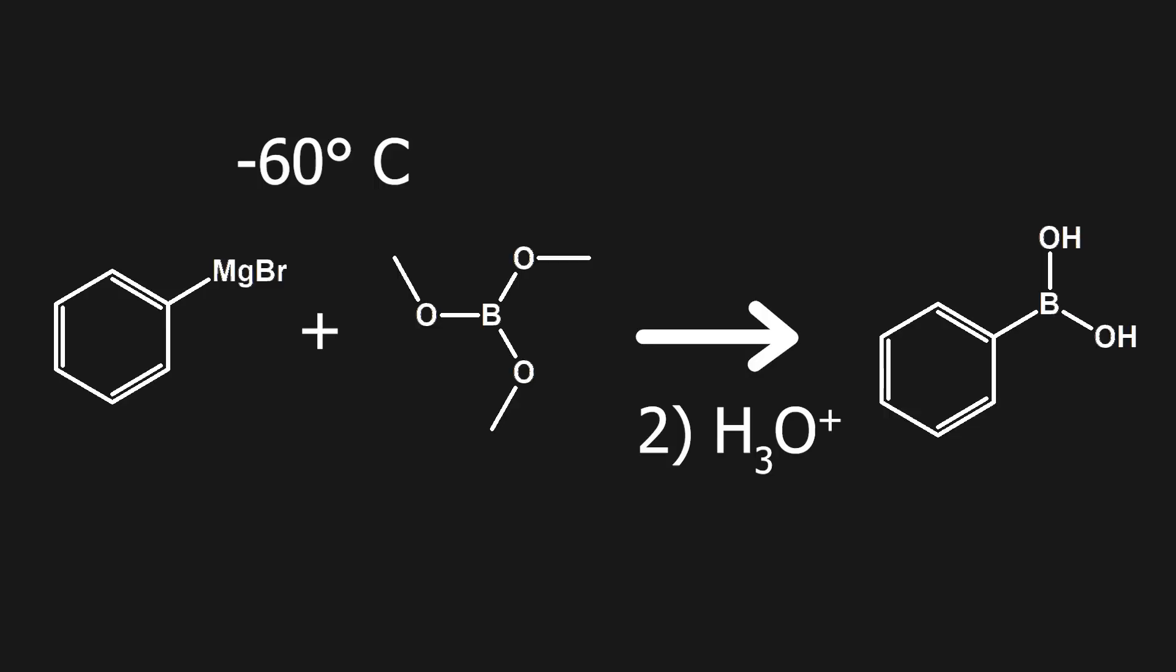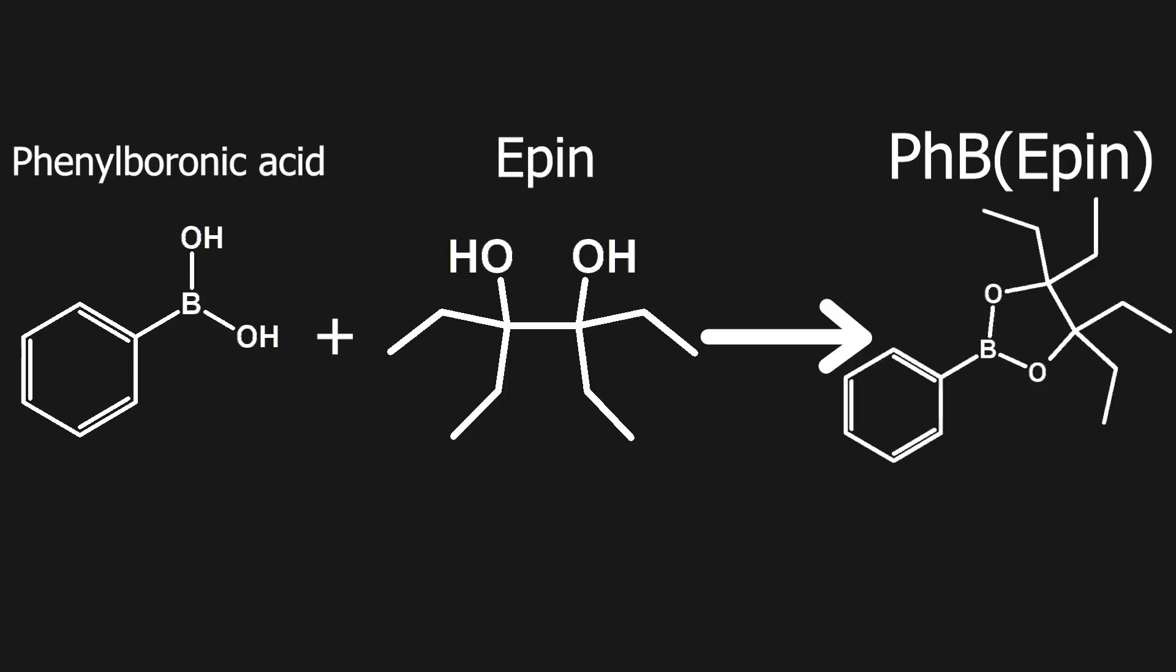With some workup, it can then be purified. And after that, I can continue with making the phenyl B-epin. Luckily, this reaction is very simple. And these reactants can simply be mixed in a 1-to-1 ratio in DCM.